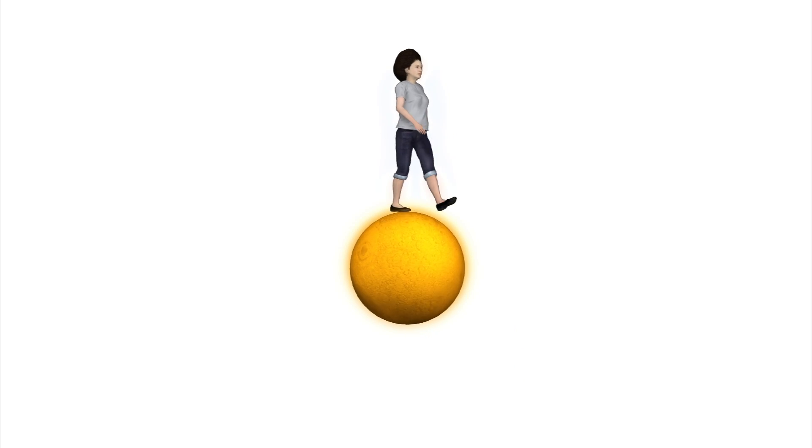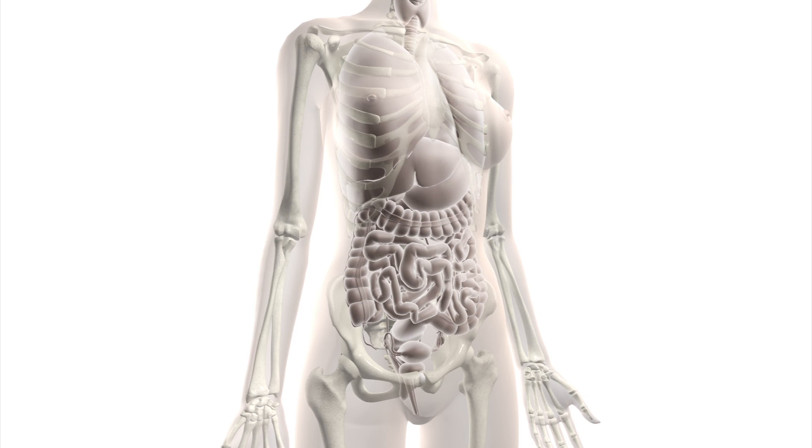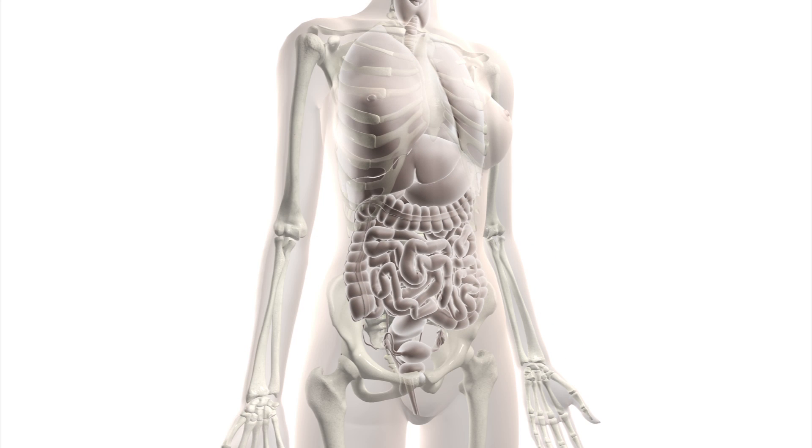If a person stood on Mars, her hair would float a bit, as would her organs. Reduced gravity affects blood.